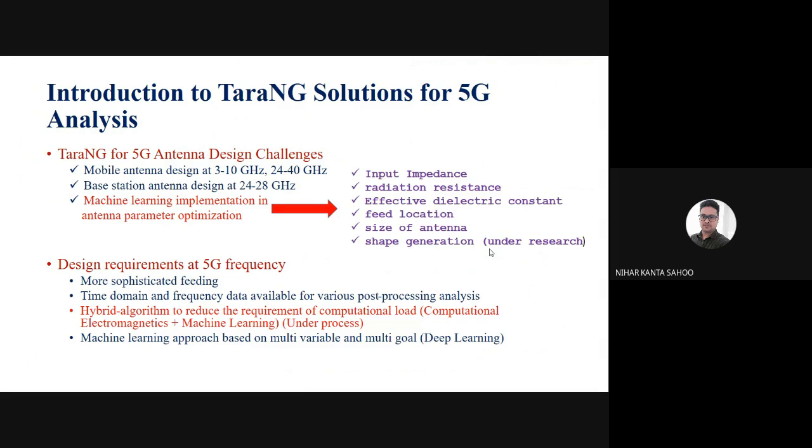Now, introduction to current solutions for 5G. Based on the requirement, we targeted two things specifically. First of all, the mobile antenna design within 3 to 10 gigahertz and 24 to 30 gigahertz. In this higher range of frequency, our software is able to solve this kind of problem. Based on antenna design, 24 to 28 gigahertz. Our main primary focus is the machine learning implementation in antenna parameter optimization.